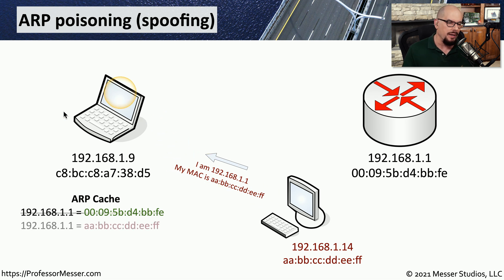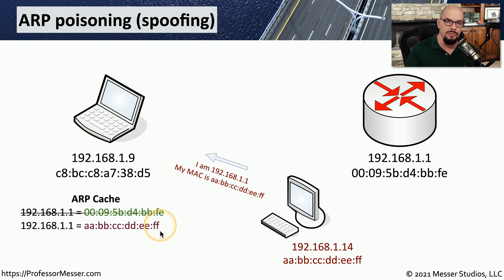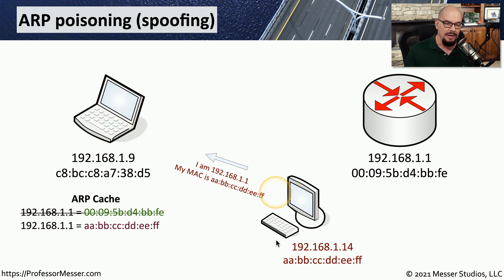When that ARP response is received by the laptop, the laptop says the ARP has changed to something different, and updates its ARP cache with the same IP address. But you can see now that the ARP cache has a completely incorrect, or spoofed, MAC address. This attacker can perform that same ARP poisoning to the router, and now everything that is sent back and forth between these devices must pass through the attacker's device.